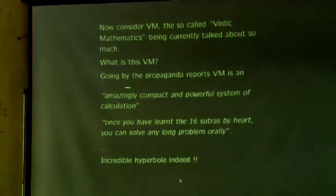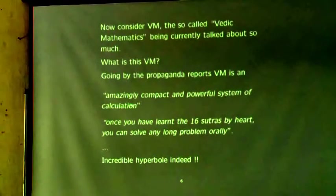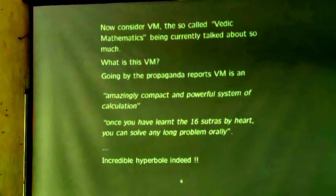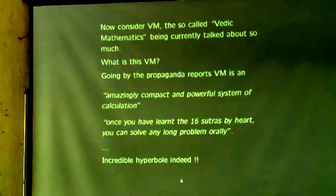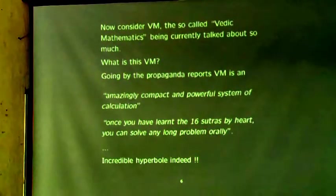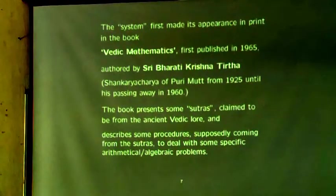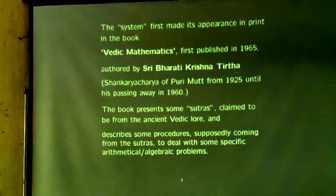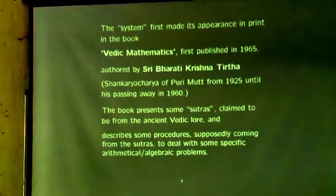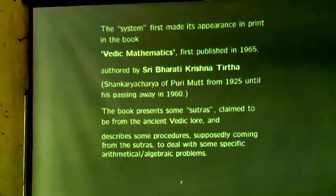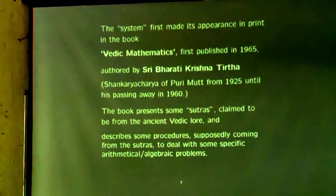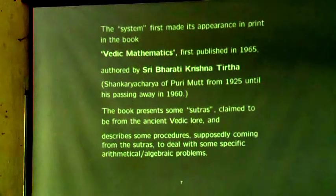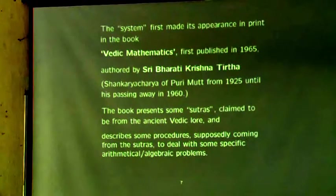Here is some typical propaganda about VM: 'amazingly compact powerful system of calculation — once you have learnt the 16 sutras by heart you can solve any long problem.' These are actual quotations from propaganda sources — incredible hyperbole indeed. The system made its first appearance in print in the book 'Vedic Mathematics,' first published in 1965, authored by Sri Bharati Krishnatirtha, Shankaracharya, from 1925 until his passing in 1960; the book was published posthumously. It presents some sutras claimed to be from ancient Vedic lore and describes procedures for specific arithmetic and algebraic operations — very limited operations.